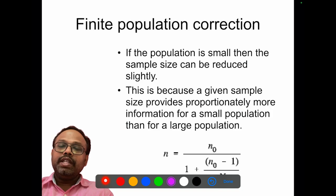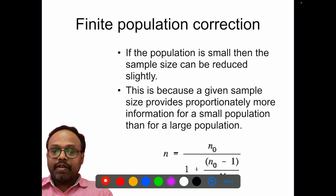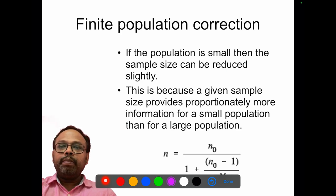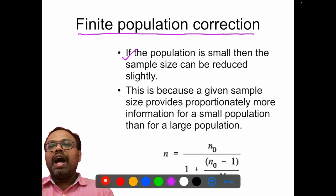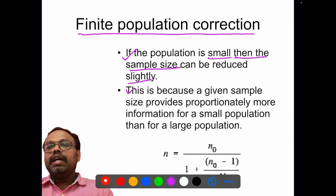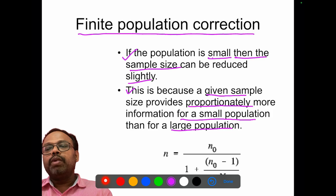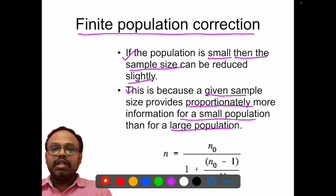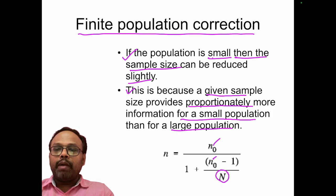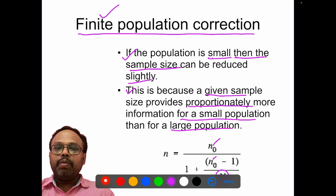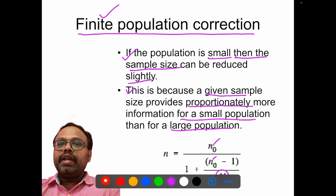There is also a possibility to reduce the sample size after calculating it, through finite population correction. If the population is small and very well-known and defined, then the sample size can be reduced slightly. This is because a given sample size provides proportionately more information for a small population than for a large population. The corrected sample size = initial calculated sample size / (1 + (initial calculated sample size - 1) / N), where N is the total population.